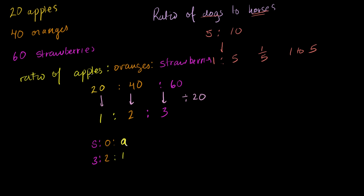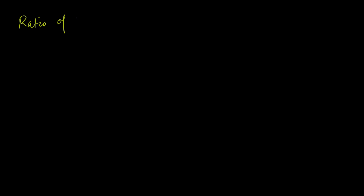In all the examples so far I gave you the quantities and we figured out the ratio. What if it went the other way — what if I told you a ratio? Say the ratio of boys to girls in a classroom is 2 to 3. That means for every 2 boys I have 3 girls, and for every 3 girls I have 2 boys.